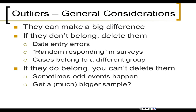One thing you can do is redo your study and get a much bigger sample. Because if there's one outlier and it really does belong with your data, then with a big sample there will be a lot of observations similar to that and it won't be an outlier anymore — you'll be able to see the patterns. There really aren't any easy solutions for what to do with outliers. You just have to think every case through very carefully and talk to your colleagues about what you should do.